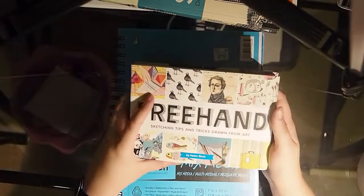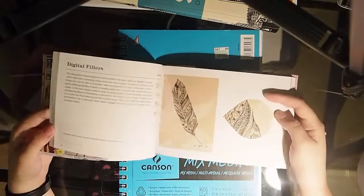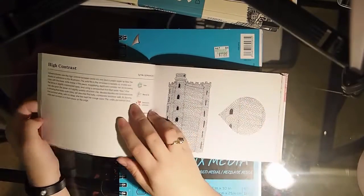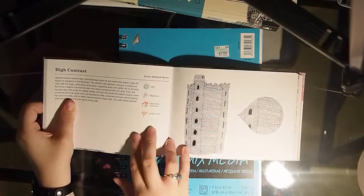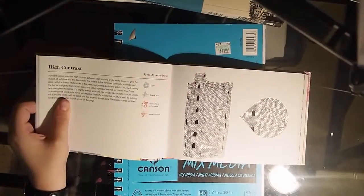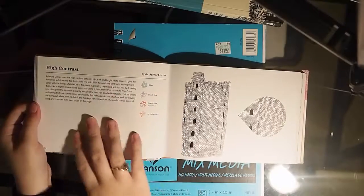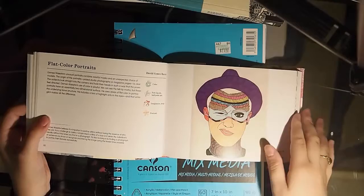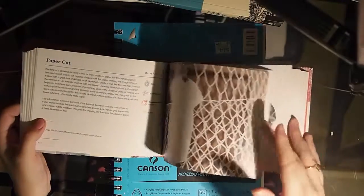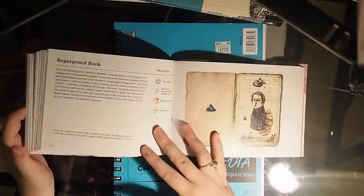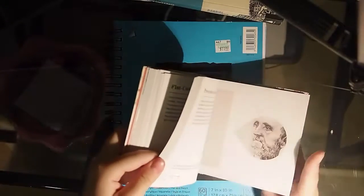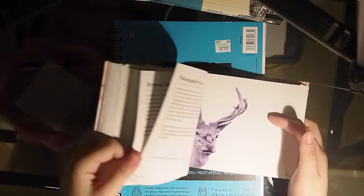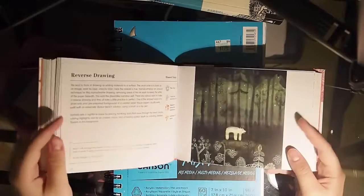This book is really cute. It's called Freehand, Sketching tips and tricks by Helen Birch. Again I bought it for the art and not for any of the tips in it. On every page it has a picture, tells you what it was done with and who the artist is. It tells you what it's trying to teach you or what the subject of it is. And then it gives you a little thing on the piece. So this is definitely inspirational. Some of the art in here is really pretty.